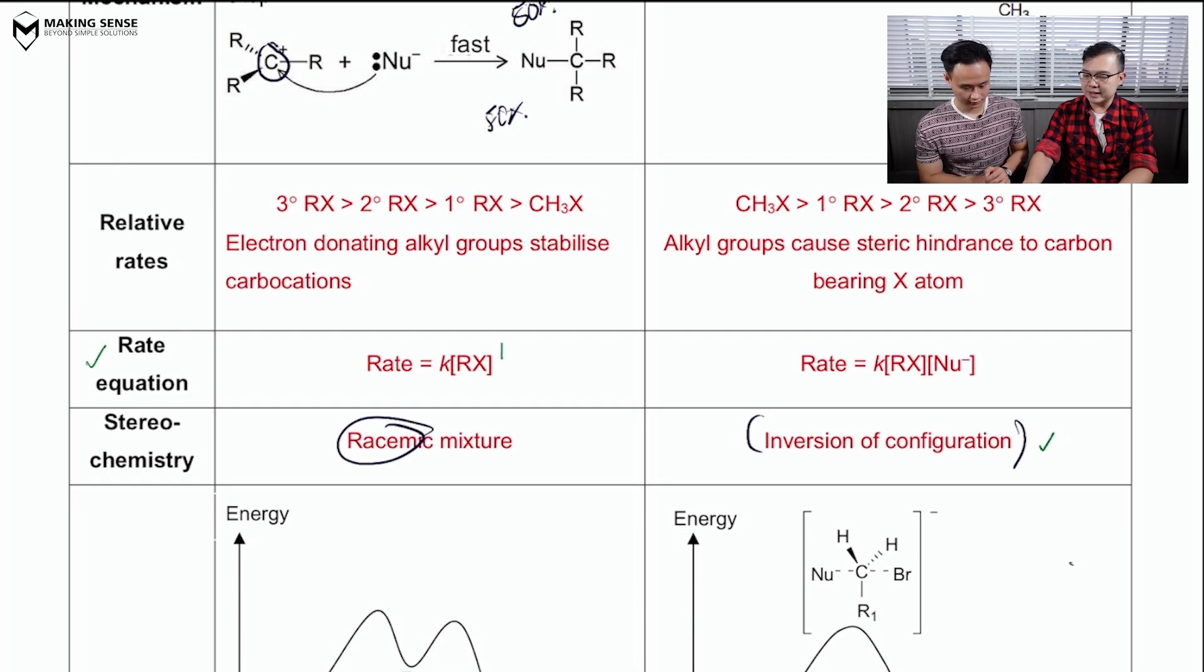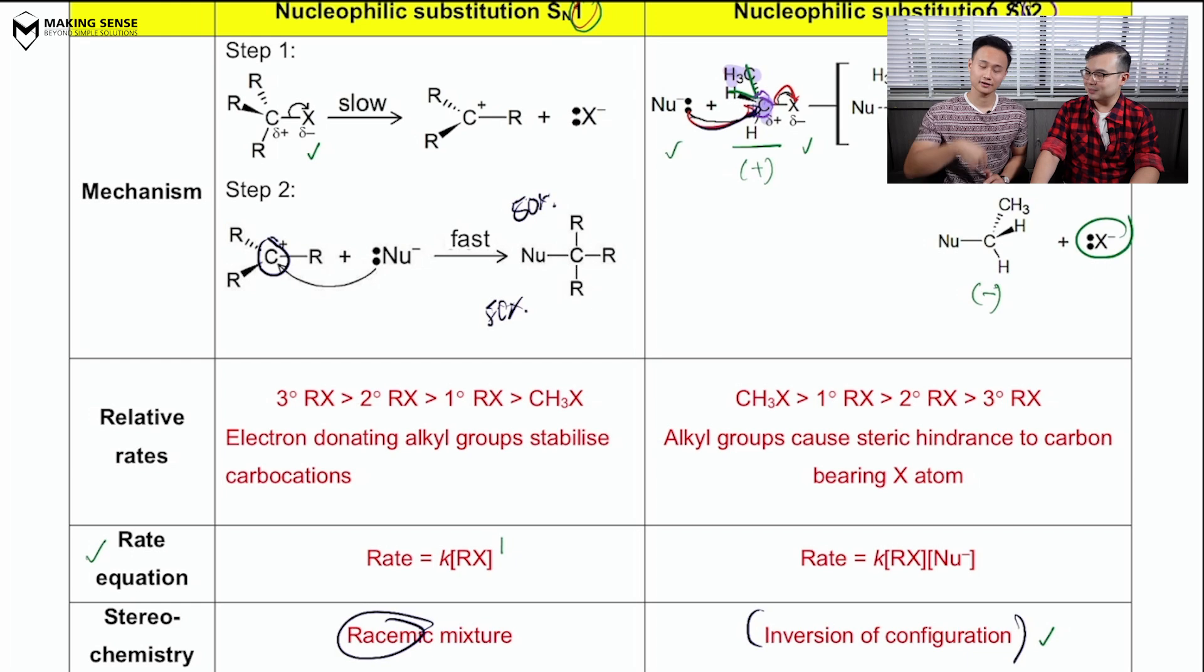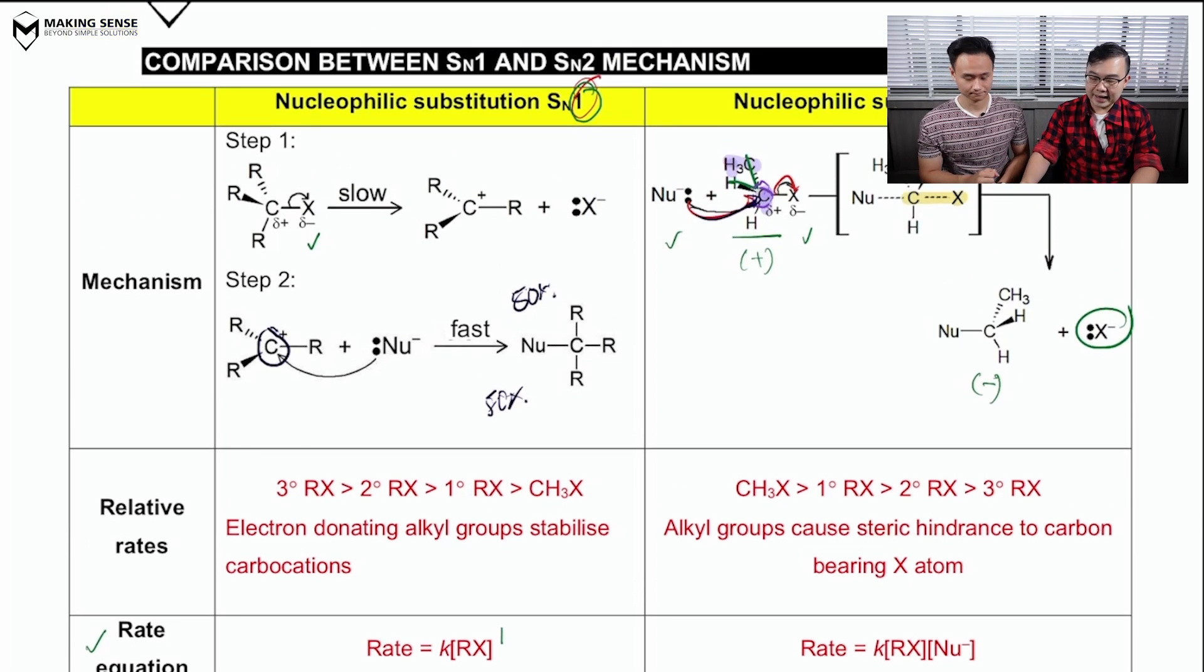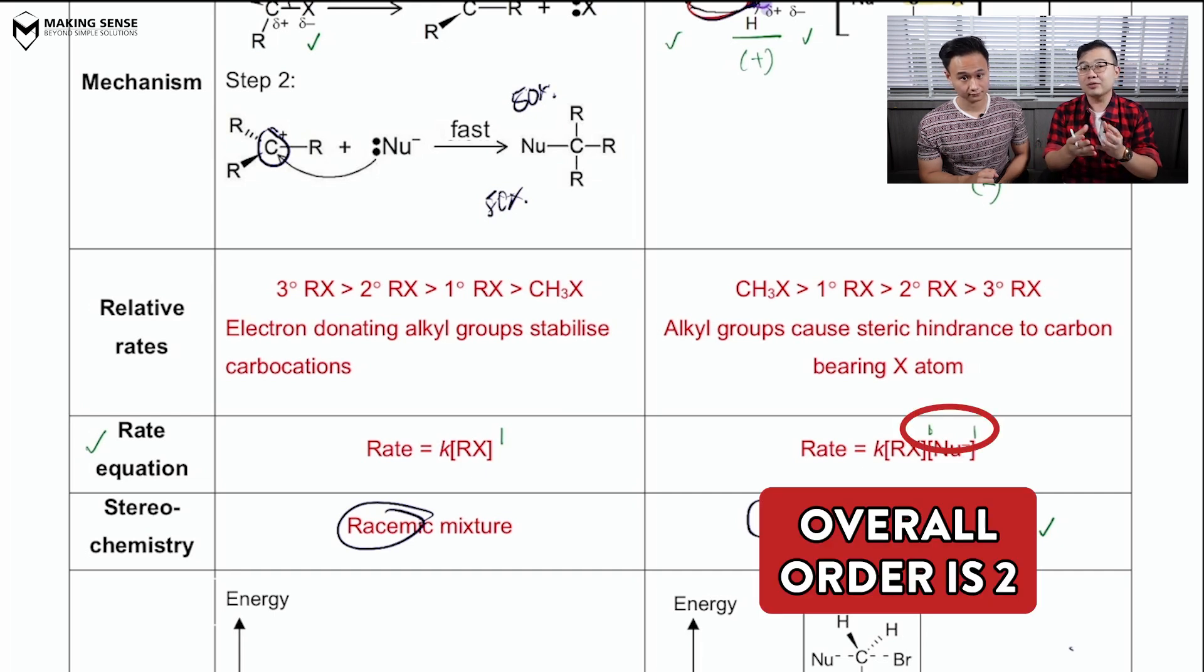how about SN2? You see that there's going to be two molecules in the slow step. So what will the overall order be? Two. Two, and that corresponds to the two over here. And in terms of the rate equation, overall order is two, where each of the reactants, its order is going to be one. Okay?